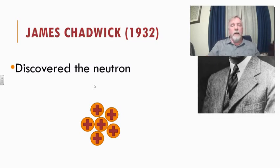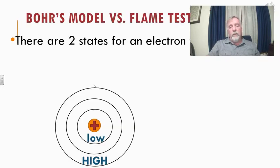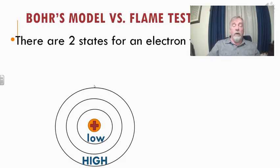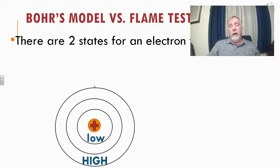Now we're going to study how these pieces interact, and that brings us back to Bohr's model. Around this time scientists were doing flame tests. We put different chemicals in flames — that's a way for us to change where our electron is, put it into a different state. Let me explain what I mean by a different state.